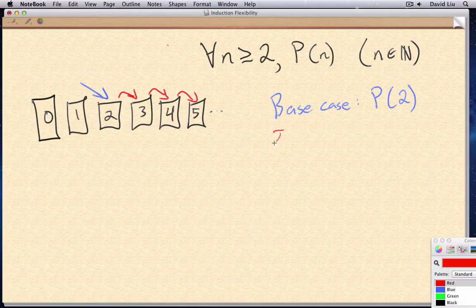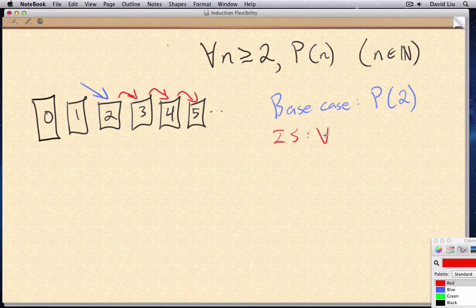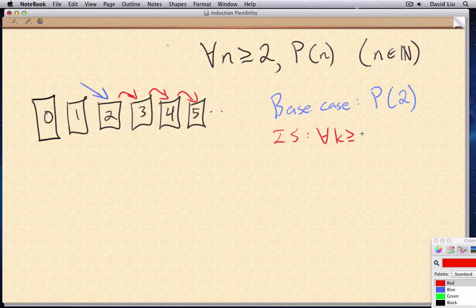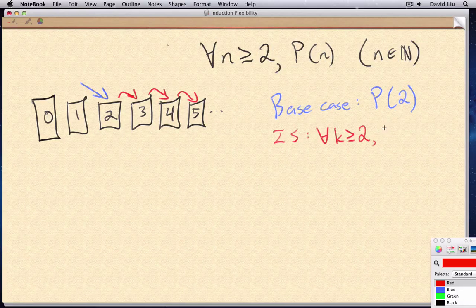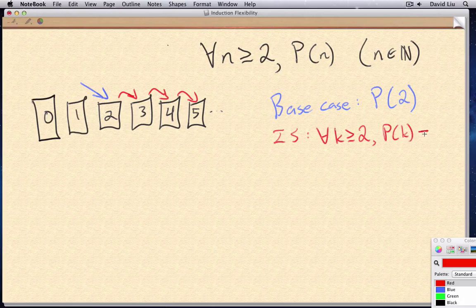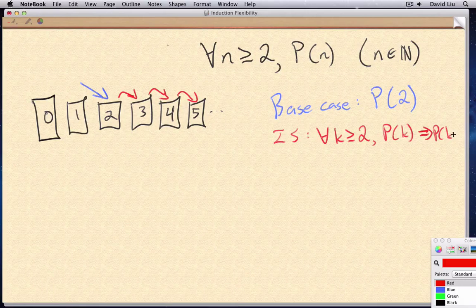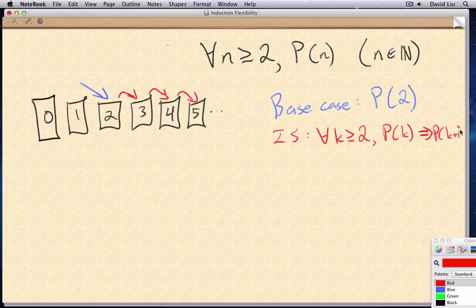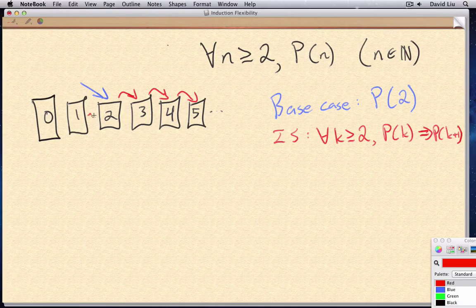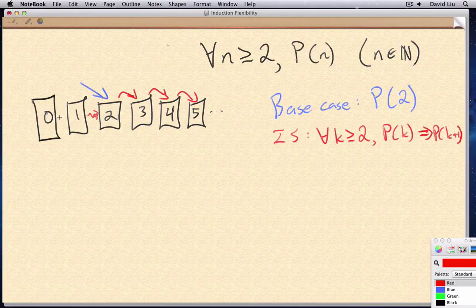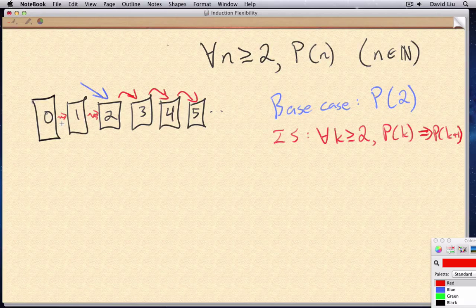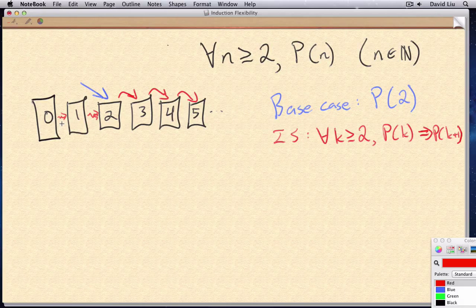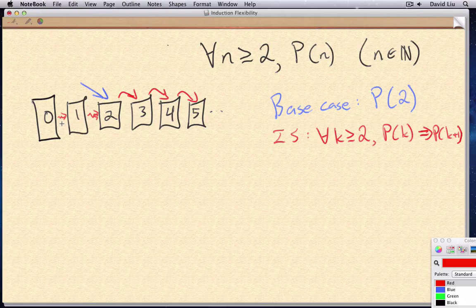The induction step remains the same, except we only need to show that the links hold when k is greater than or equal to two. That is, we don't care about these links over here because they're not important to us. We don't need to use them to prove what we want to prove.